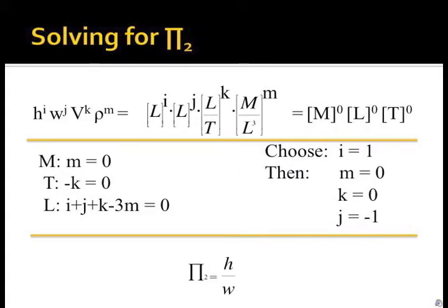Here, the variables are height, width, velocity, and density. The same process from before is repeated to obtain the second pi term.